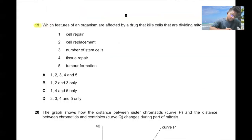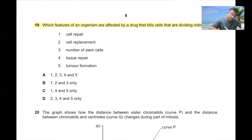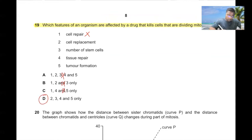Question number nineteen. Which features of an organism are affected by a drug that kills cells dividing mitotically? Cell repair cannot occur if this is affected. If one is wrong, then options A, B, and C are eliminated. So options 2, 3, 4, and 5 only are correct, and the answer is D.